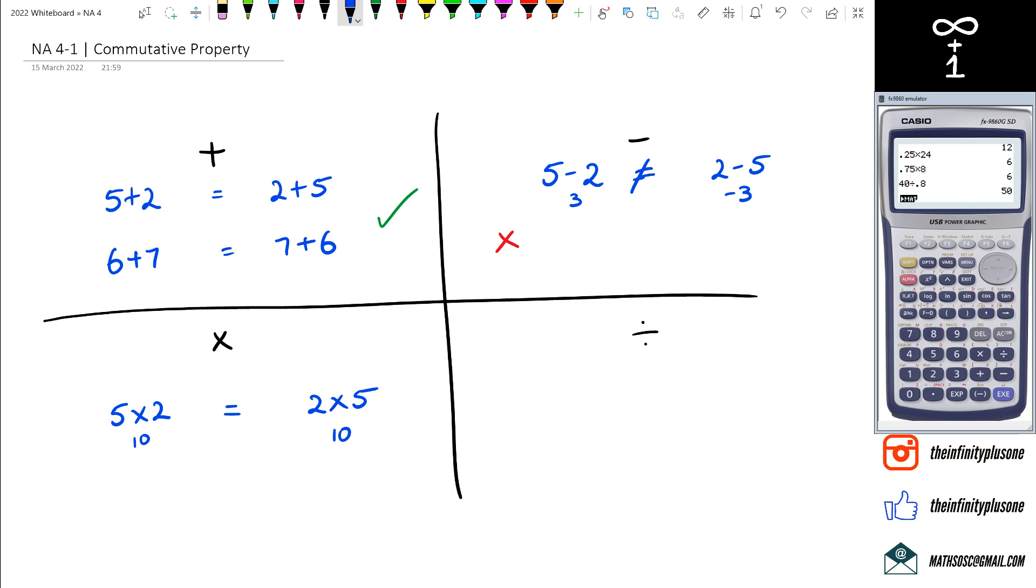Let's do another example with subtraction. What about if I do 7-3? I'm going to get 4. But if I do 3-7, I'm actually going to get negative 4. So once again, I can see that 7-3 is not the same as 3-7.